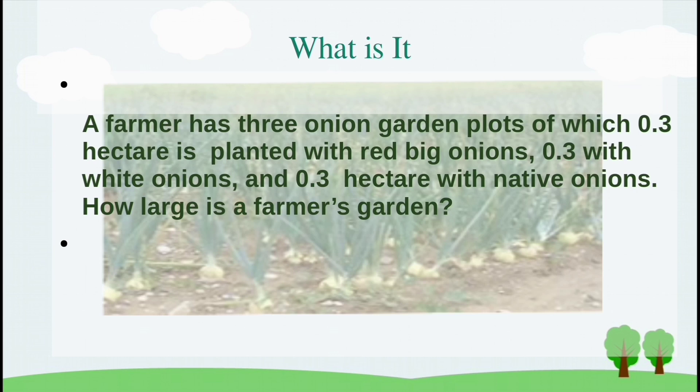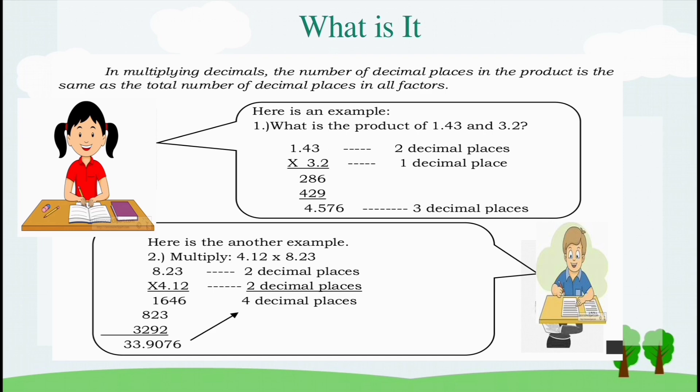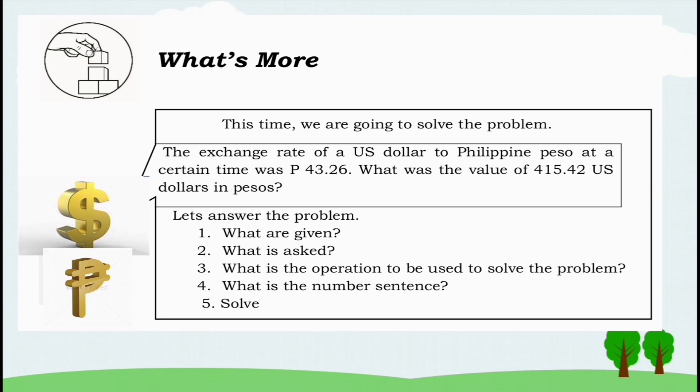What is it? A farmer has three onion garden plots of which 0.3 hectare is planted with red big onions, 0.3 with white onions, and 0.3 hectare with native onions. How large is a farmer's garden? In multiplying decimals, the number of decimal places in the product is the same as the total number of decimals in all factors. Now we are going to solve the problem. The exchange rate of a US dollar to the Filipino peso at a certain time was 43.26 pesos. What was the value of 415.42 US dollars in pesos?